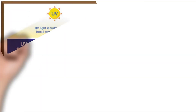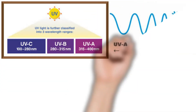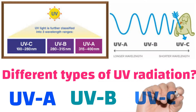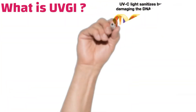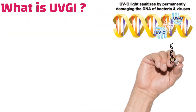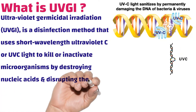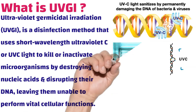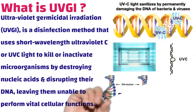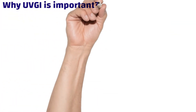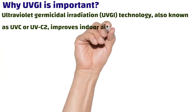There are three types of UV radiation: UVA, UVB, and UVC. What is UVGI? Ultraviolet germicidal irradiation is a disinfection method that uses short-wavelength ultraviolet C (UVC) light to kill or inactivate microorganisms by destroying nucleic acids and disrupting their DNA, leaving them unable to perform vital cellular functions.